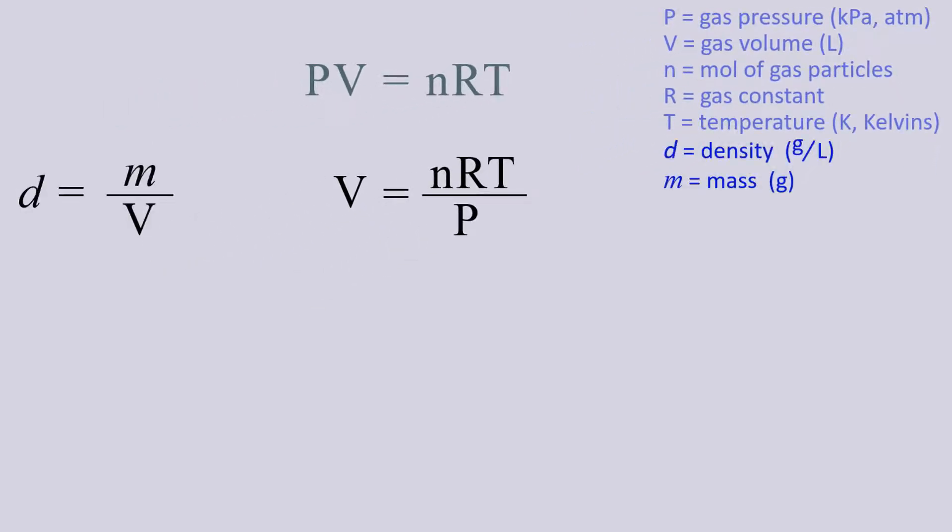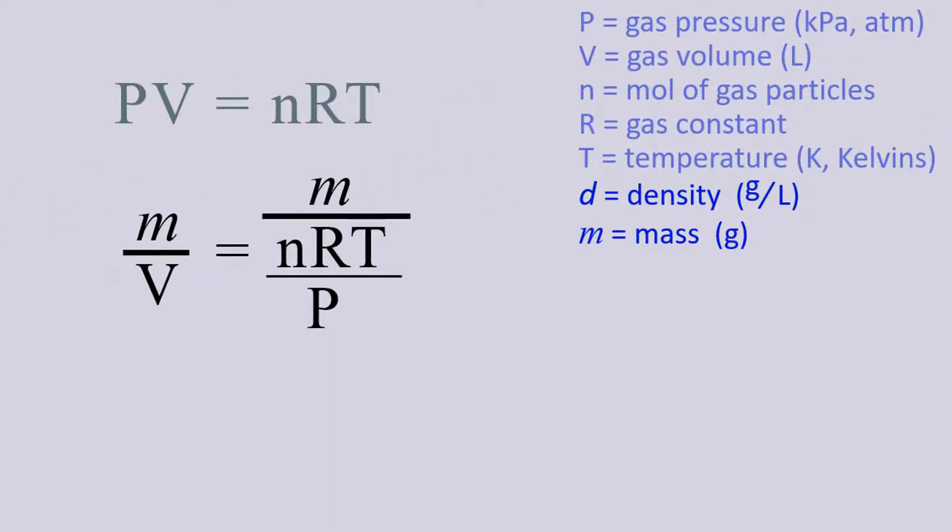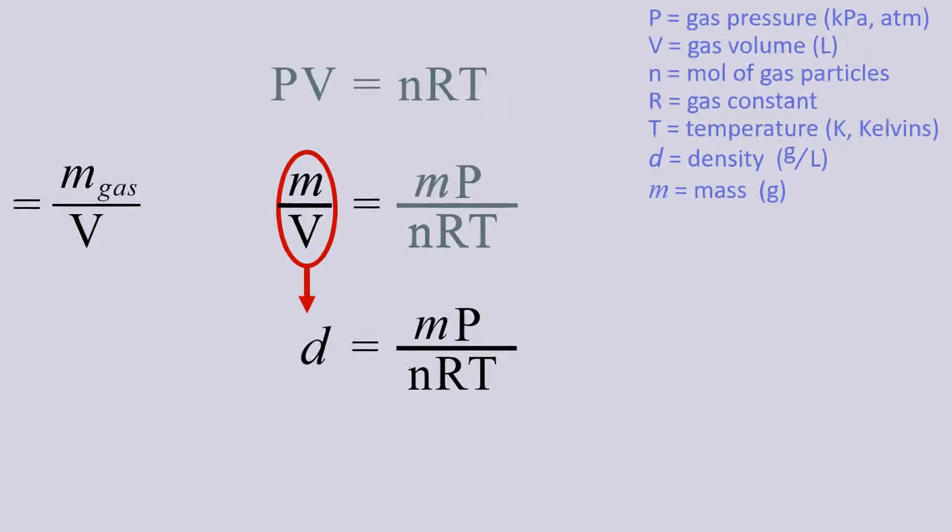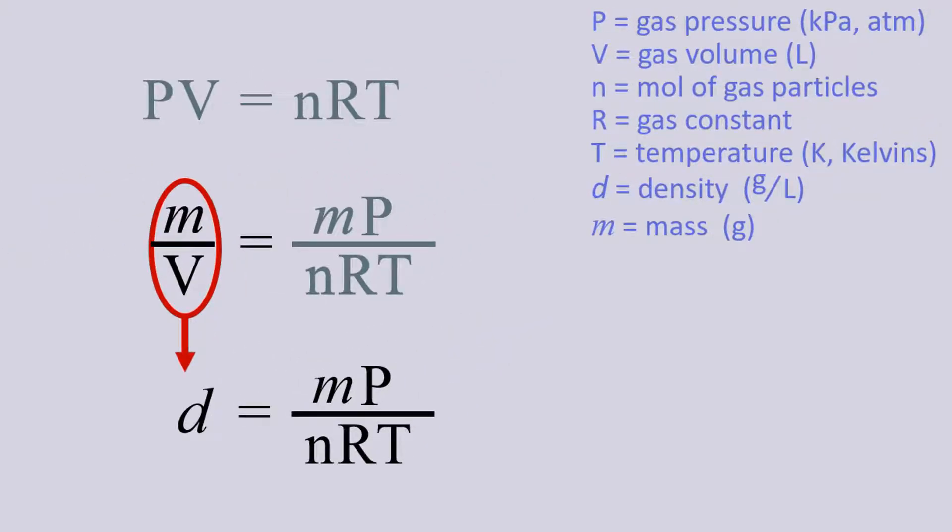We know that density is mass divided by volume, in this case gas volume, so if we divide mass by volume on the left, that gives density. But we would then have to divide the right side into mass to keep things equal. Pressure is now in the denominator of a denominator and so comes to the numerator. Density is mass times pressure divided by nRT.